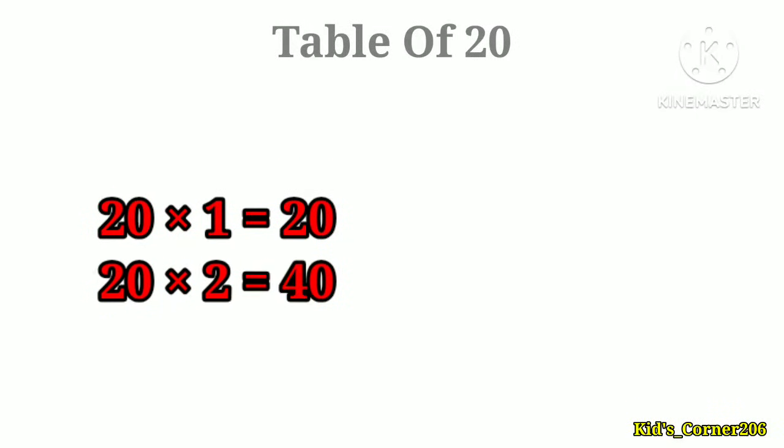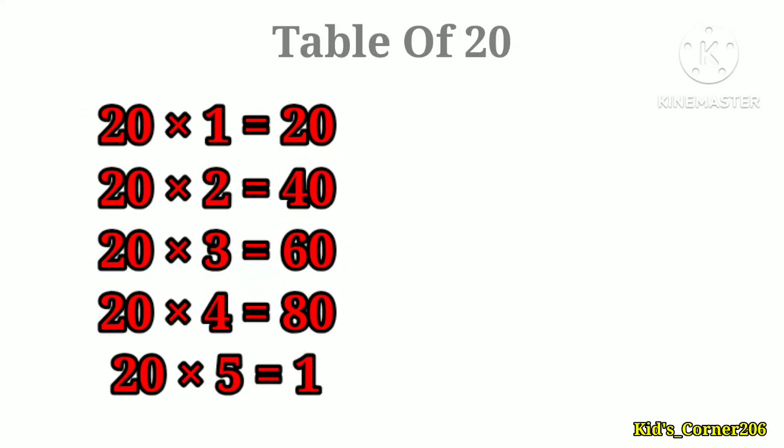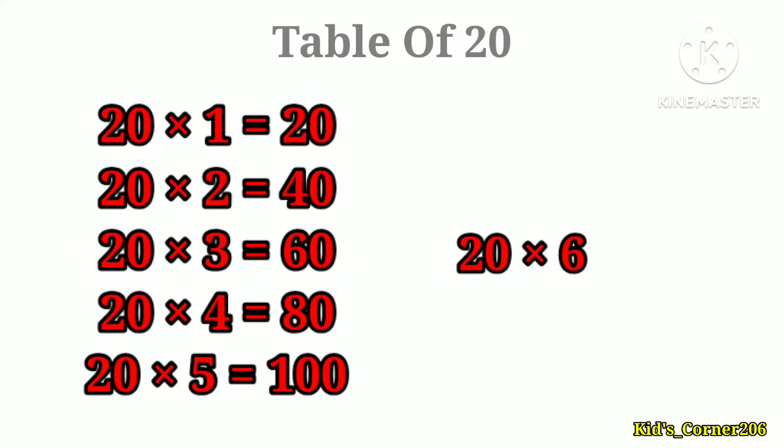20 twos are 40, 20 threes are 60, 20 fours are 80, 20 fives are 100.